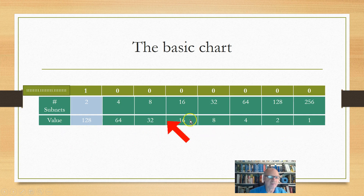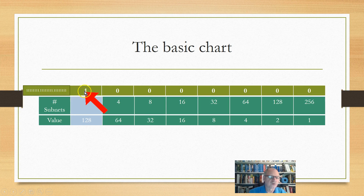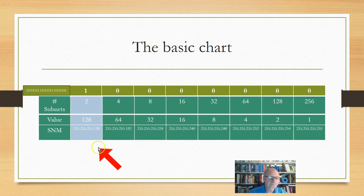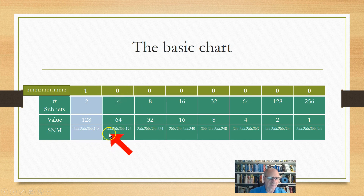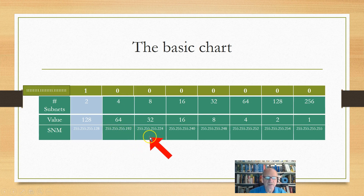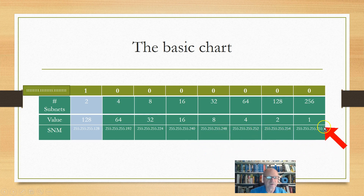Underneath this I'm going to put the subnet masks. Remember, this subnet mask is 255.255.255, and with one borrowed bit the fourth octet becomes .128, so the full mask is 255.255.255.128. If I borrow another bit and put a one there, I can get four networks and the subnet mask would be 255.255.255.192. Continuing across: 240, 248, 252, 254, 255. We've seen this before — I'm assuming 255.255.255 and we're all working in the fourth octet here.